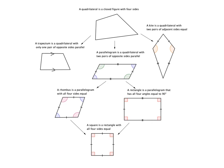Now let's deal with a kite. A kite is a quadrilateral which has two pairs of adjacent sides equal — one pair of adjacent sides equal to each other, and another pair of adjacent sides equal to each other. Because of those equal sides, it ends up having one pair of equal angles: the angles between the unequal sides are equal to each other. We can't say anything about the other two angles.